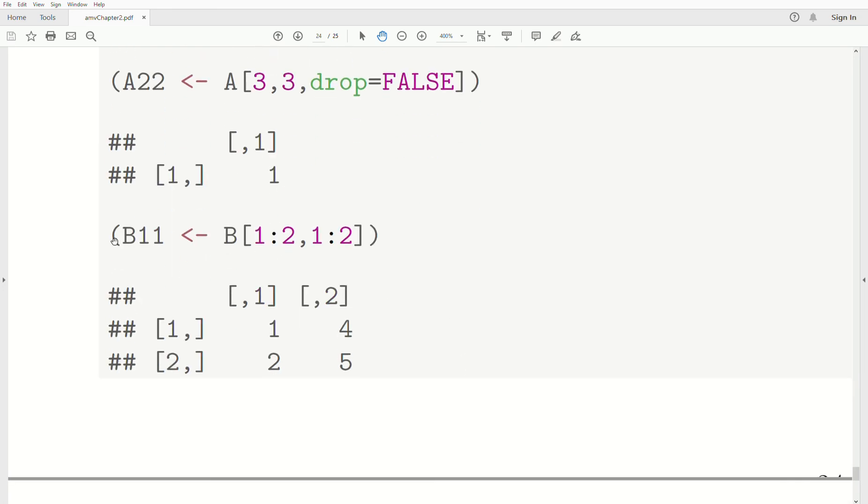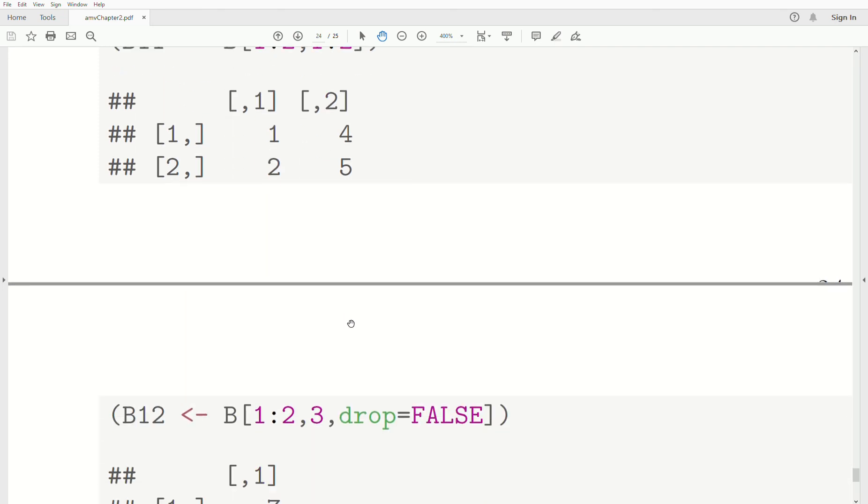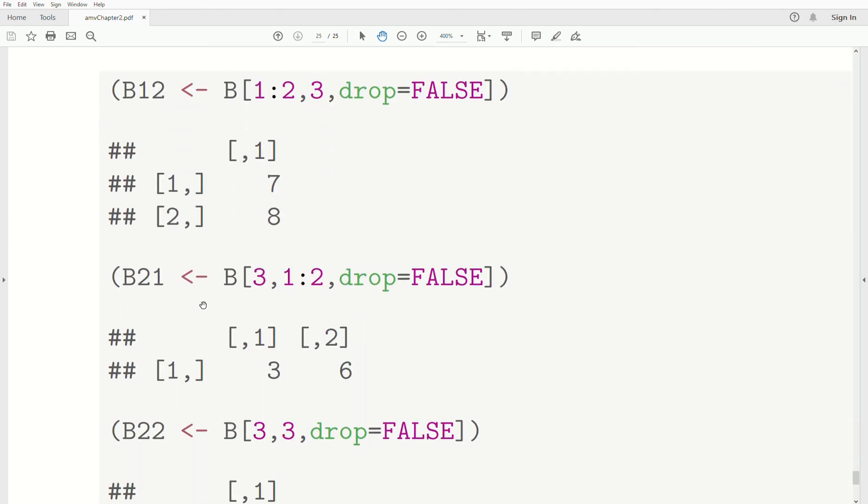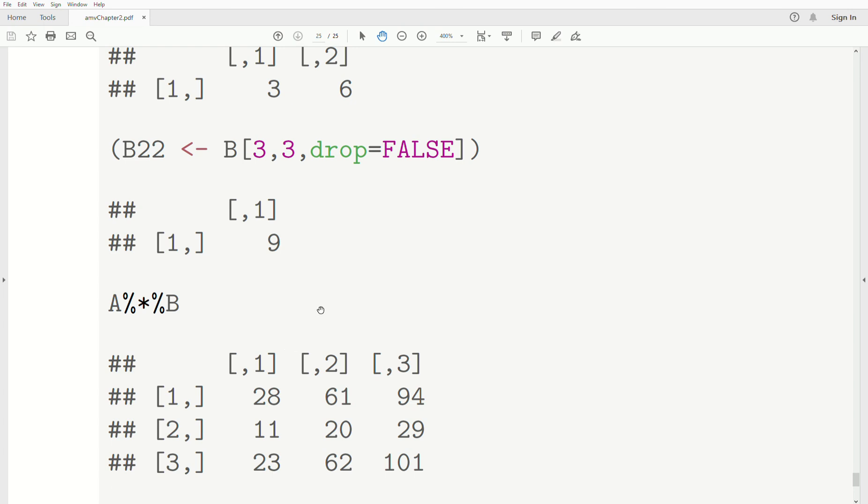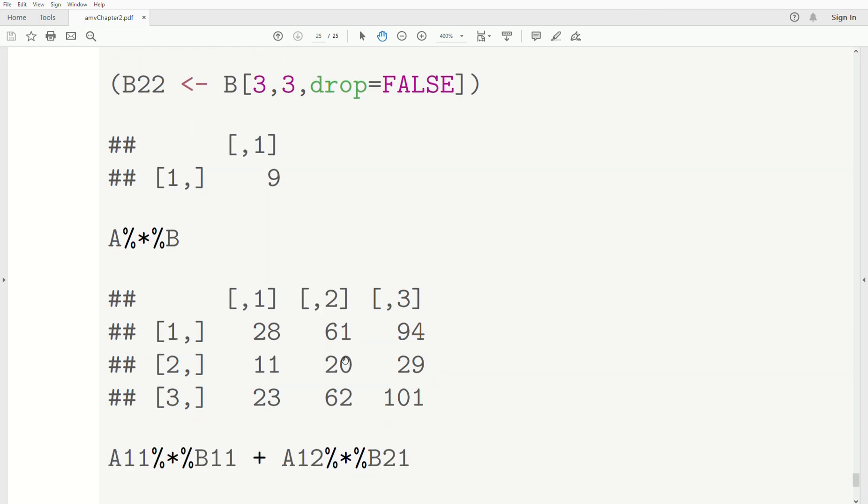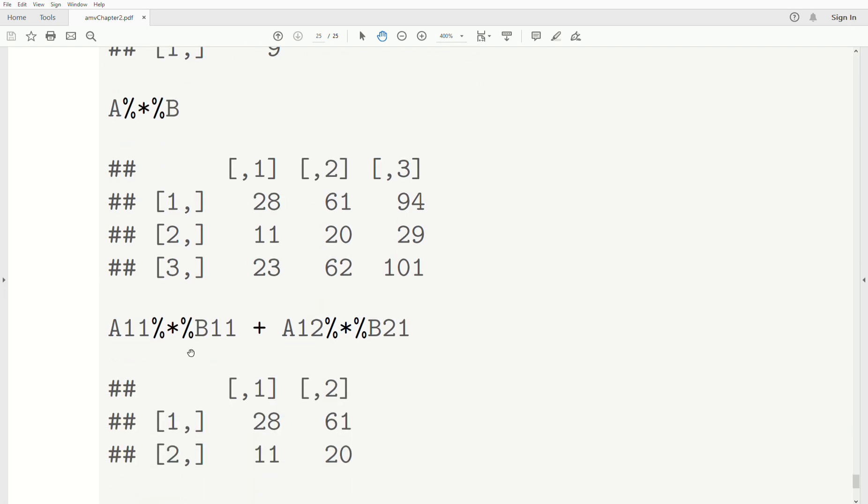Then we also have to do this with the matrix B. So I'm just going to go fast because it's really the same thing. But we're just saying B instead of A. And here it is. So this is matrix product of A times B. And we get this right here. Now if we use the formula above, so A11 times B11 plus A12 times B21, we get this matrix. But look at that. That's this part of the matrix.